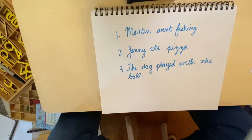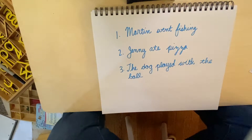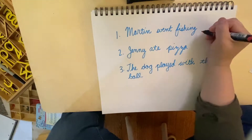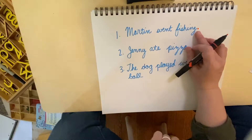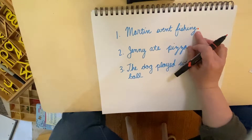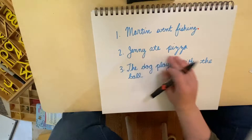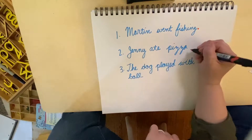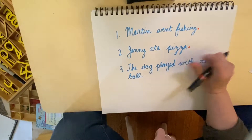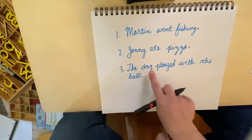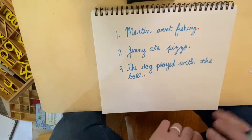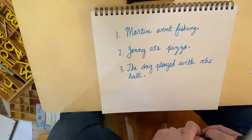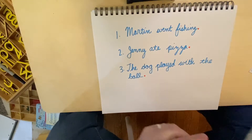When we have a full sentence, there's something special we always do at the end. When it is telling us something, we put what's called a period at the end of the sentence. So Martin went fishing — period — it's the end of a sentence, the end of a complete thought. Jenny ate pizza — that's the end of a sentence, so we put a period. The dog played with the ball — that's the end of a sentence.